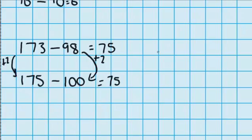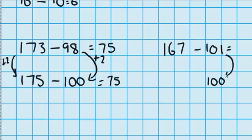Let's have a look at this question: 167 minus 101. I'm imagining both these amounts on a number line, and I'm thinking, wouldn't it be easier if that 101 actually was 100? So I'd move that 101 down to become 100. Now if I want to keep that distance the same, I'm also going to have to move my 167 down one, so that becomes 166. So 166 minus 100 equals 66.